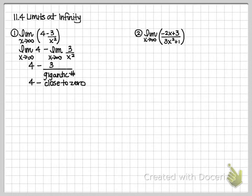So if I do that, I'm going to get 4 minus something that's almost 0, if not really close to 0. That's going to give me 4. So my original question — the limit as x approaches infinity of that expression — is actually just going to be 4.